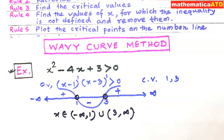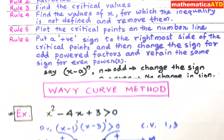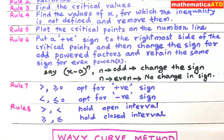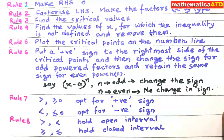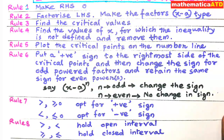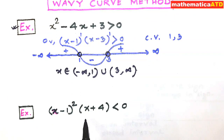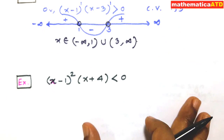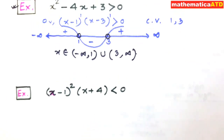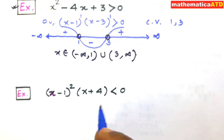Now we shall take the second example. Our next example is (x - 1)² · (x + 4) < 0. What are the critical points here? The critical points are respectively 1 and minus 4.